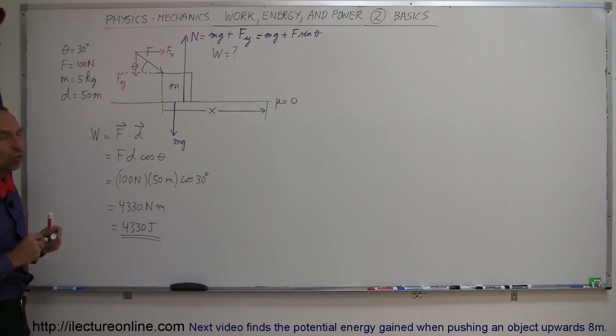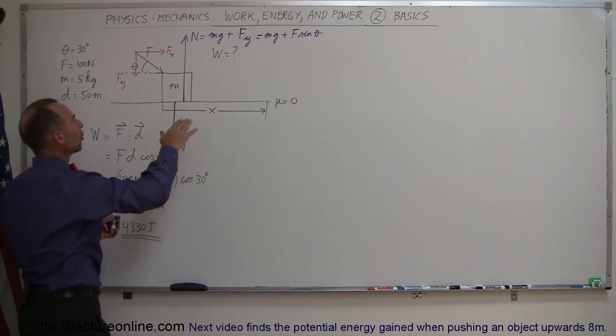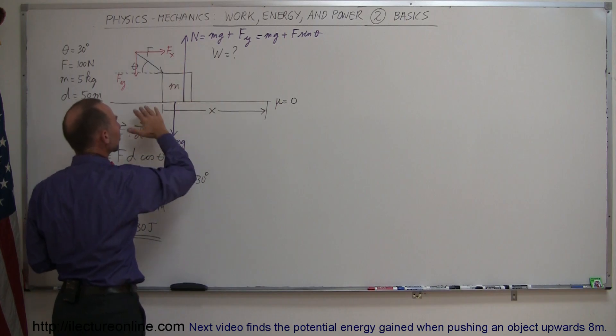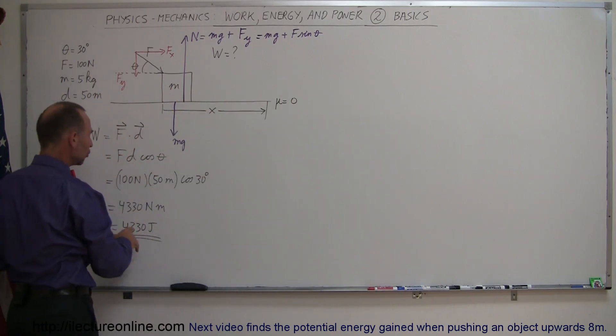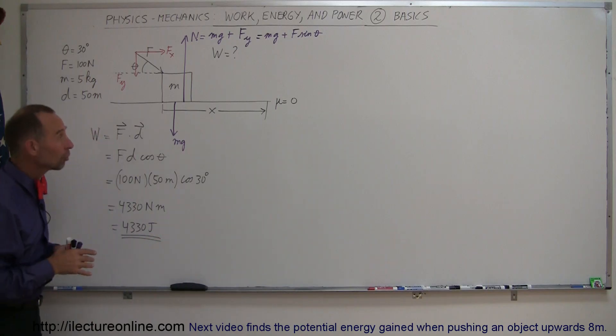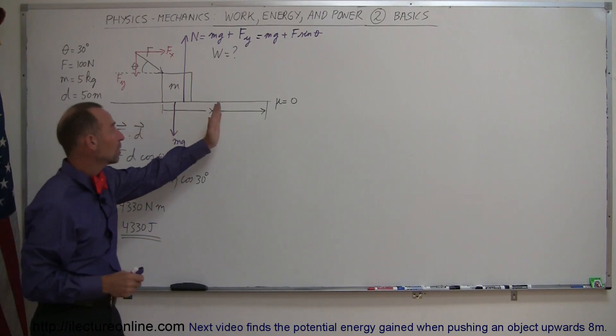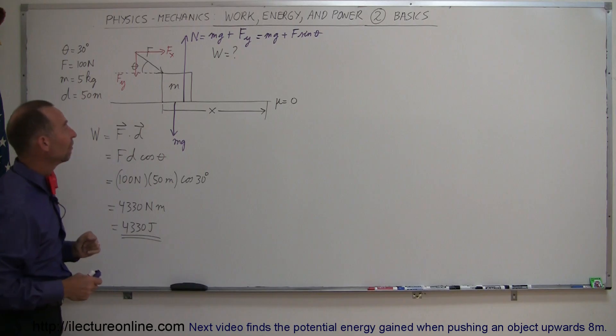All right, but notice if there's no friction here, friction is zero, that means that this normal component does not give you any friction force, which means that the entire work done is simply used to give the block energy. All of the 4,330 joules were given to the block in terms of energy, so when the block has reached a distance of 50 meters, the block will now have 4,330 joules of energy.